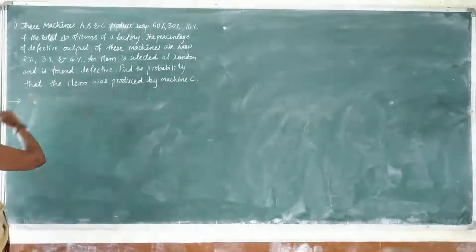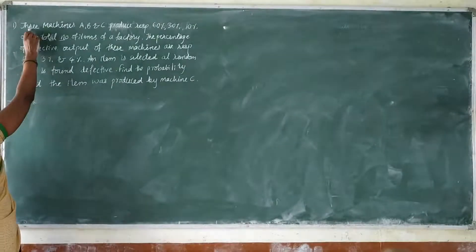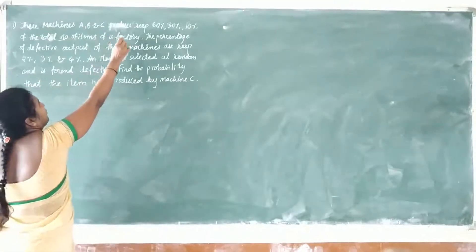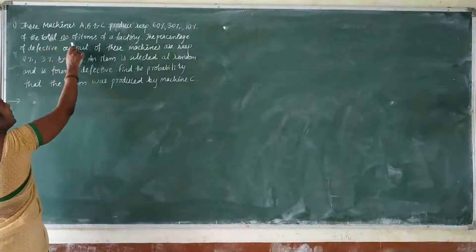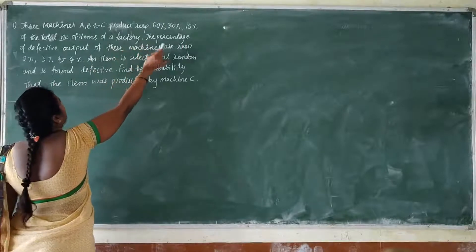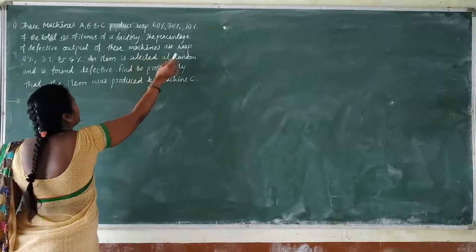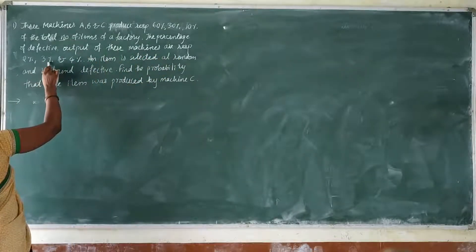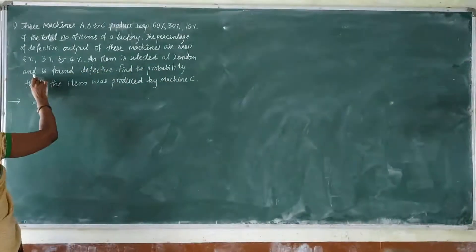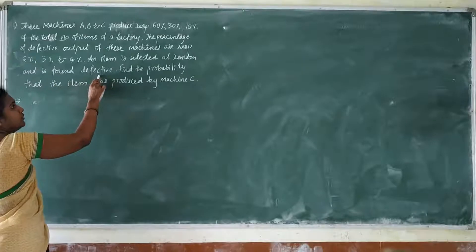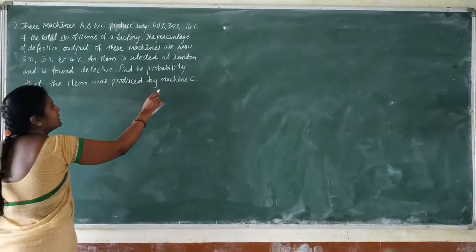Let us see the problems on Bayes' theorem. Here we have the first problem. Three machines A, B, C produce respectively 60%, 30%, 10% of the total number of items of a factory. The percentage of defective output from these machines are respectively 2%, 3%, and 4%. An item is selected at random and is found defective. Find the probability that the item was produced by machine C.